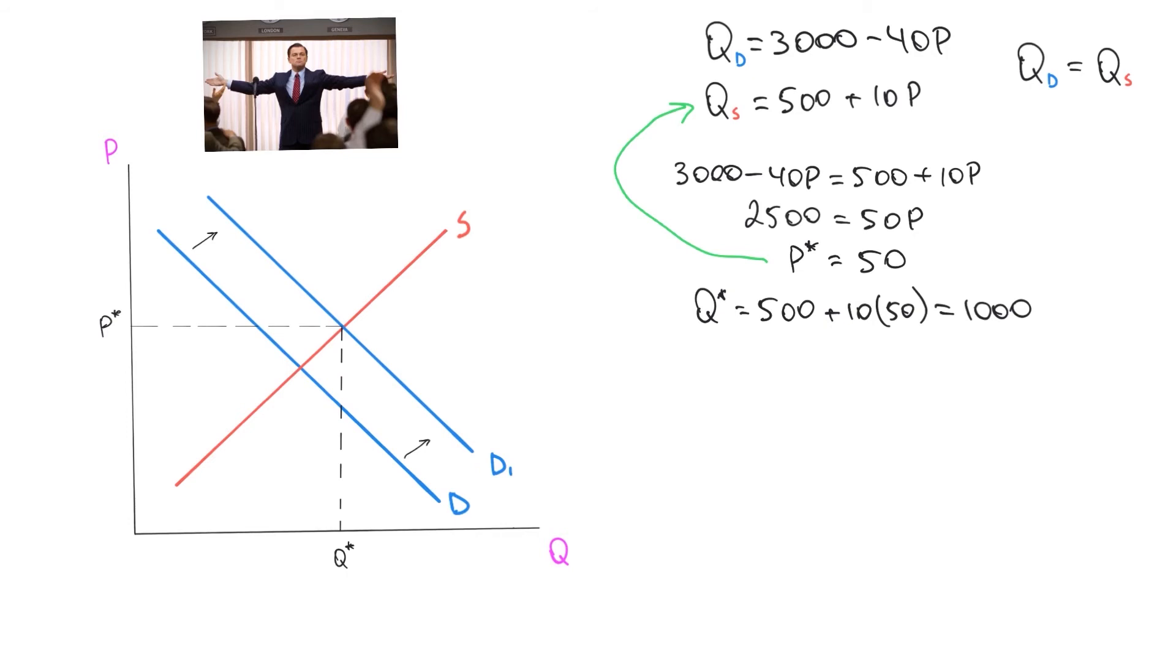So in this case, when people have more money, the new optimal price is 50. And the new optimal quantity is 1000. Which makes sense, because if people have more money, they can buy more stuff and they're willing to spend more money for it. And this is what causes inflation. So check out one of our other videos if you want to learn more about inflation.